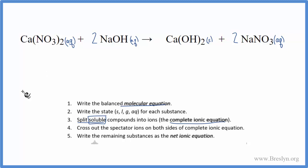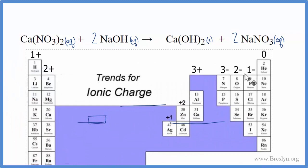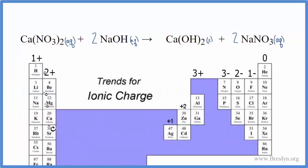So to do that, it's helpful to look at the periodic table and, if memorized, the charges on the different ions. So you can see the trend on the periodic table for ionic charge. Calcium right here is 2+. Nitrate, we don't have on the periodic table. We'll go back to that in a minute.